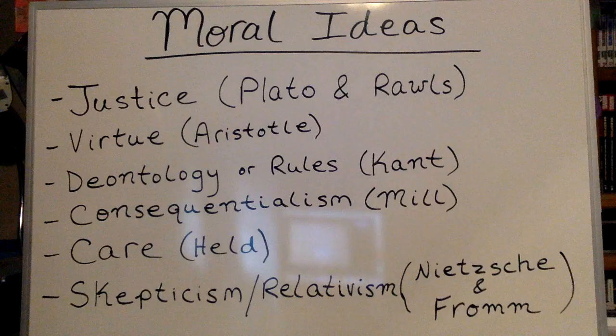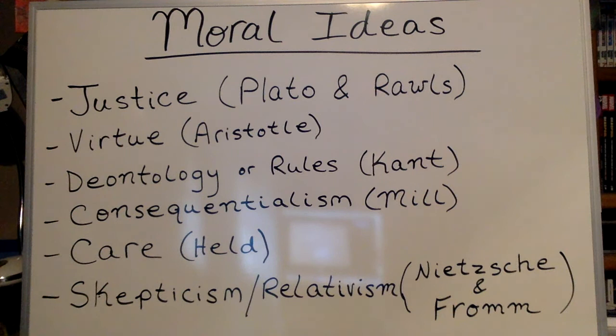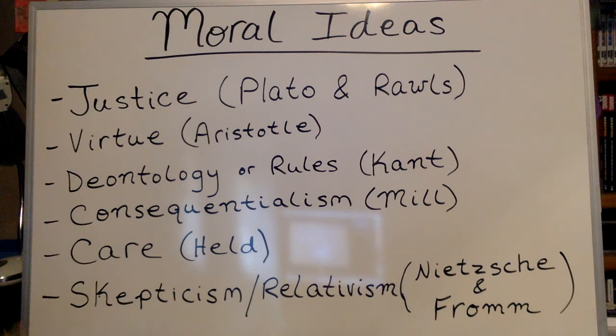Next up, we have the different moral ideas that we're going to be looking at in the first month of the class. We're going to look at all of these different theorists and different ways of thinking about morality, and then apply those to different moral situations in the real world. We're really going to begin the course with the definition of justice from Plato. And later on, we'll see a different definition of that from Rawls. There really are a lot of different ways to think about this idea of justice.